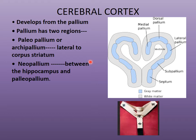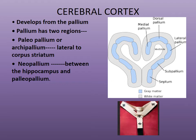The gray matter of the cerebral cortex develops from the pallium — a Latin word for the woollen vestment used by Roman popes. We will discuss the development of the corpus striatum, which appears lateral to the interventricular foramen, and also the hippocampus.